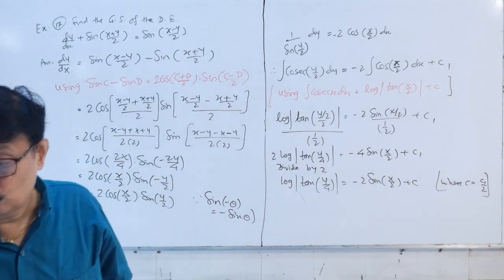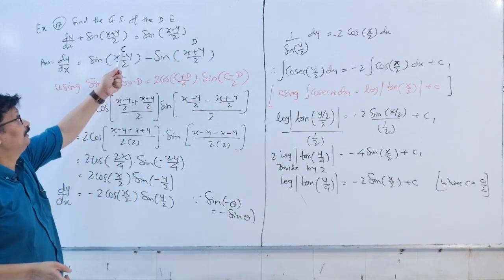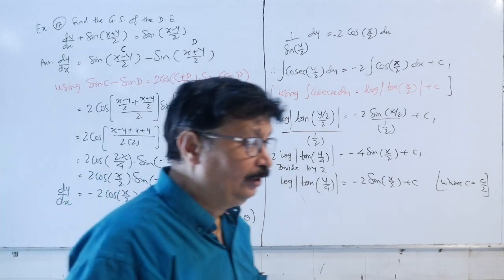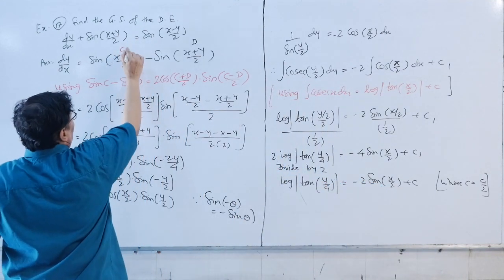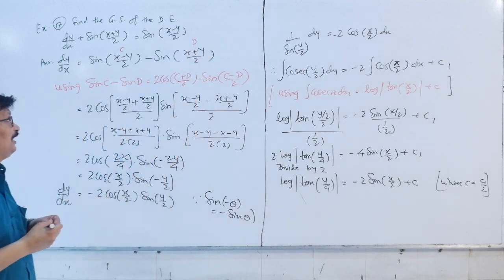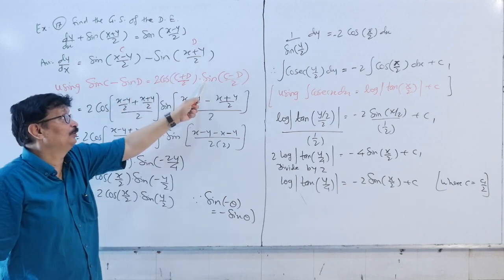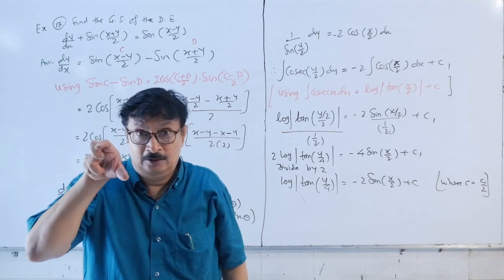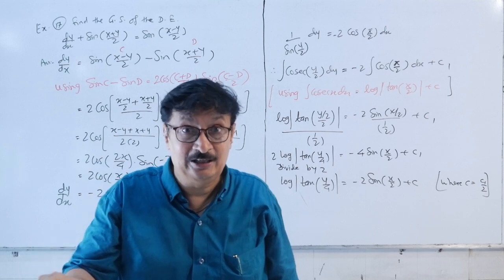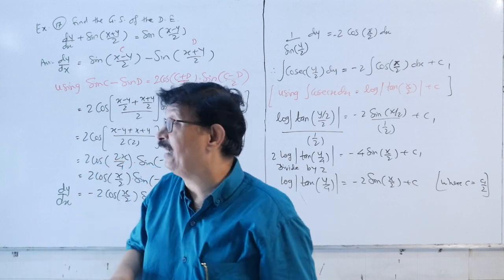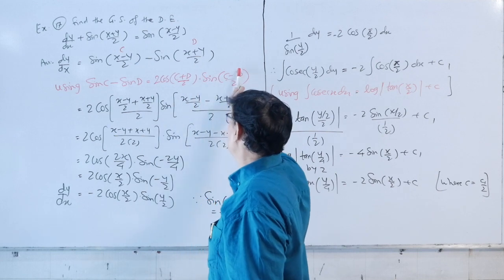Now the formula that comes to mind is sin C minus sin D. If I consider sin(x - y/2) as C and sin(x + y/2) as D, I will use sin C minus sin D equals 2 cos((C+D)/2) into sin((C-D)/2).